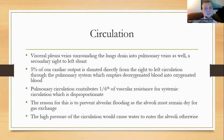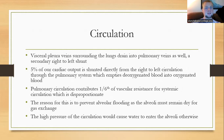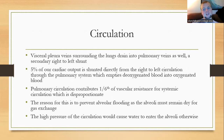Pulmonary circulation resistance is about 1% of vascular resistance for the systemic circulation. This is for the purpose of preventing alveolar flooding. If the pulmonary circulation were less resistant, hydrostatic pressure from blood flowing into the lungs would cause water to filter out of the capillaries and into the alveoli, flooding them and preventing gas exchange. The alveoli must remain dry for gas exchange.